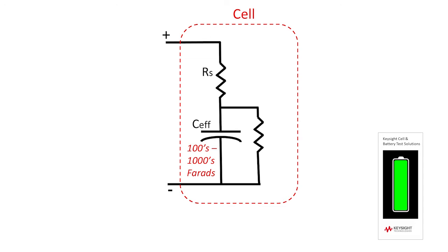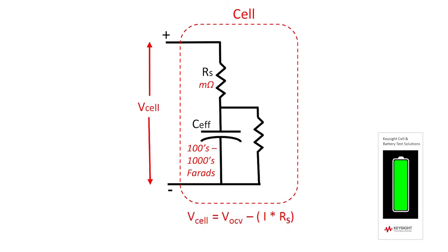R-sub-S is the internal or ohmic series resistance of the cell. This resistance is typically a few milli-ohms. R-sub-S causes the cell voltage to drop as you pull more current from the cell, since the cell voltage equals the cell's open circuit voltage minus the product of the load current and the series resistance: V-cell equals the cell's open circuit voltage minus the load current times R-sub-S.